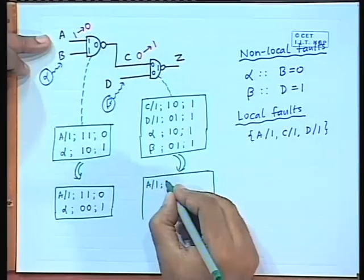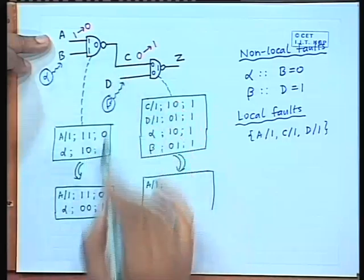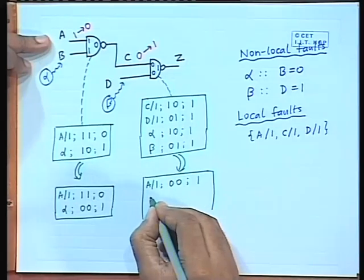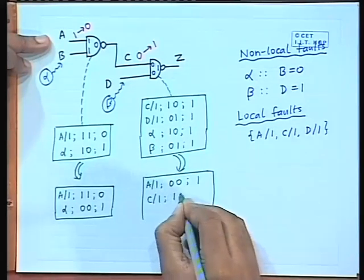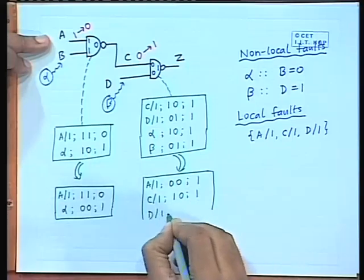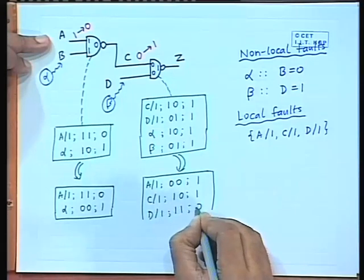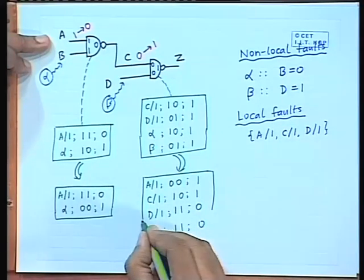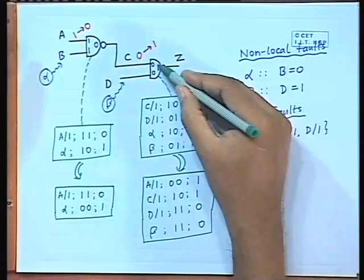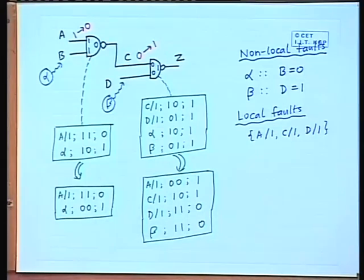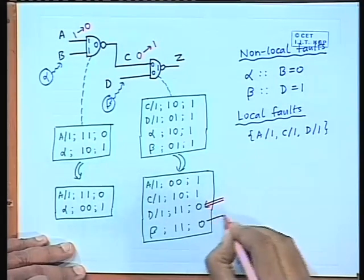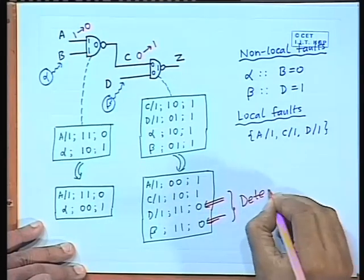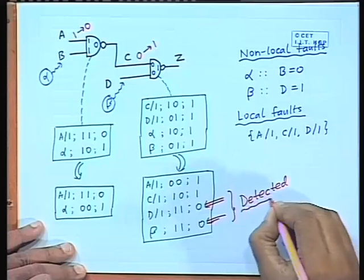For the second gate's modified fault list: A stuck-at-1 now appears because its output (0) differs from the new true value (1), giving input 0,0 and output 1. C stuck-at-1 remains 1,0 output 1. D stuck-at-1 becomes 1,1 output 0. Fault beta becomes 1,1 output 0. So now there are two faults — D stuck-at-1 and beta — for which the output is 0, meaning they get detected by this second test vector.